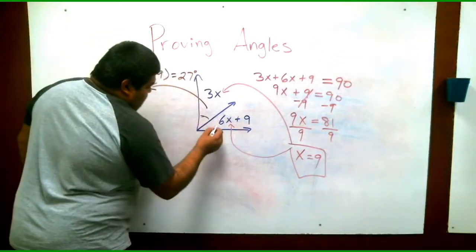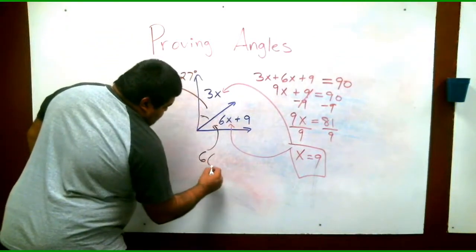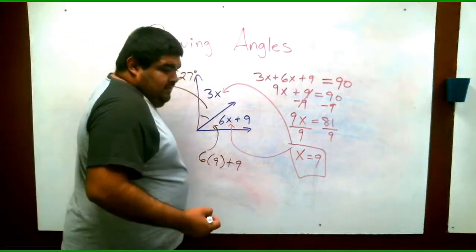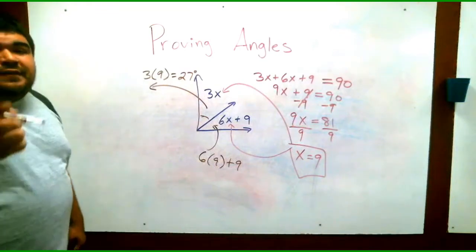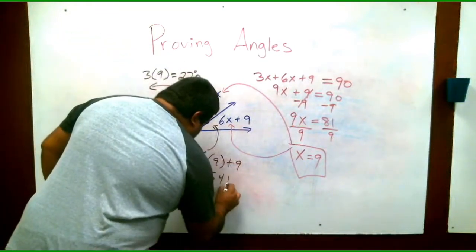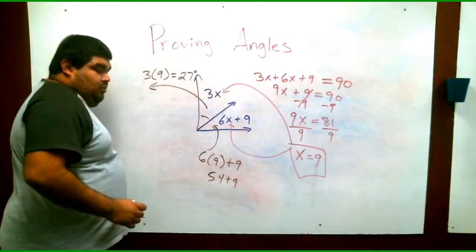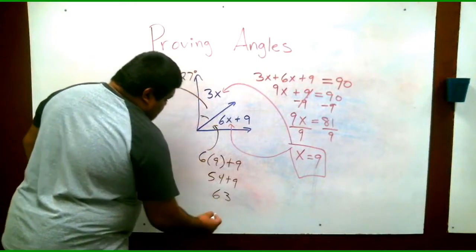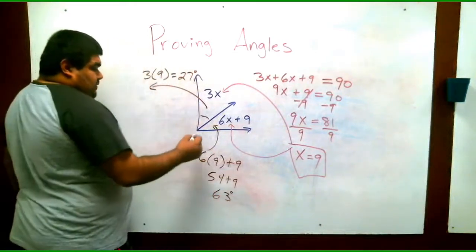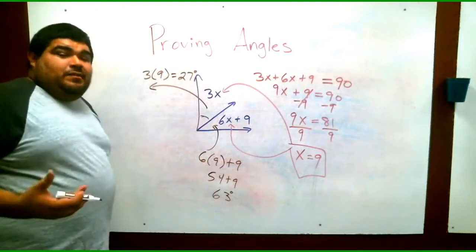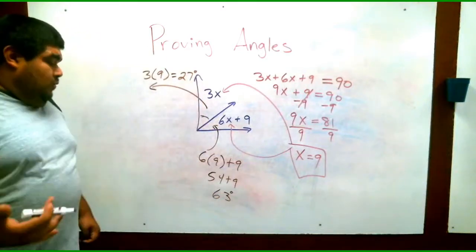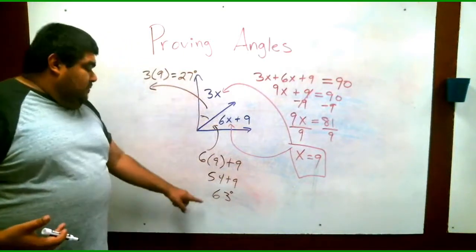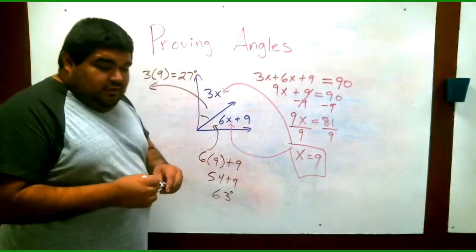For the bottom we have 6 times 9 plus 9. 6 times 9 is 54 plus 9. We're looking at 63, 63 degrees. Again, we can find out if we plug it in. 63 plus 27, which 7 plus 3 is 10. Just bring the 1. So 3 times 3 and 6 is 9. So it does work out.